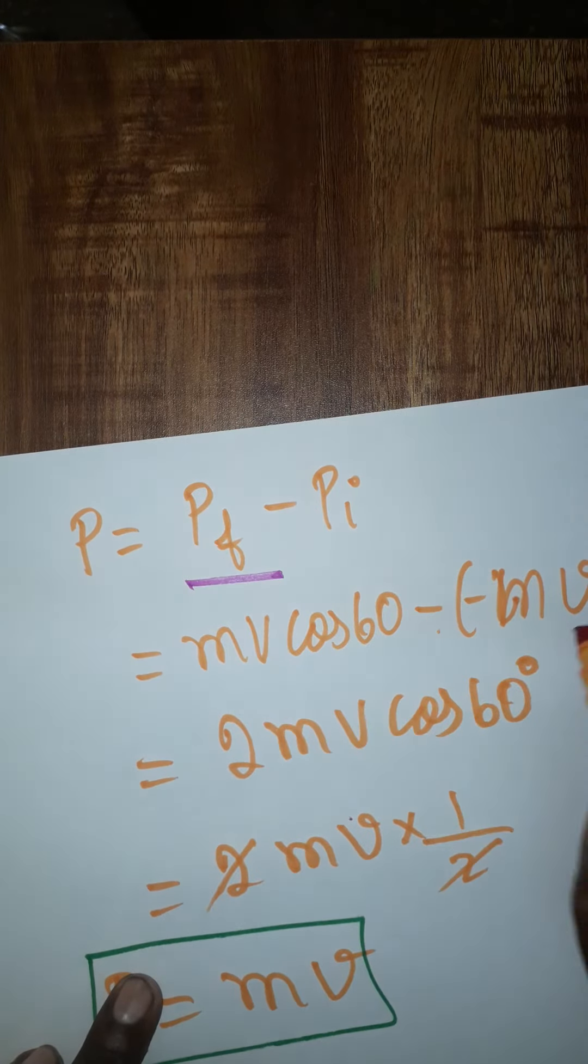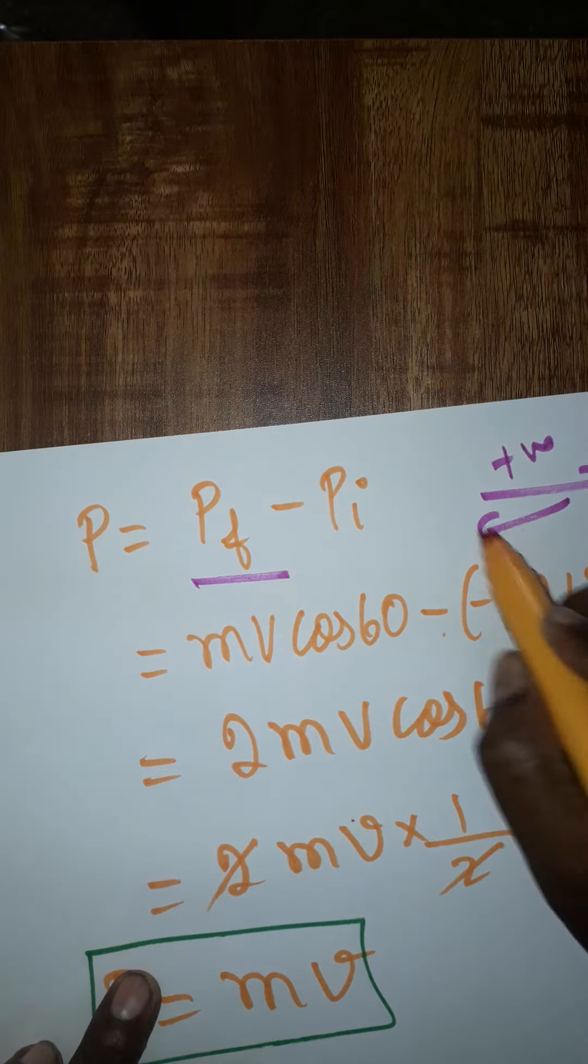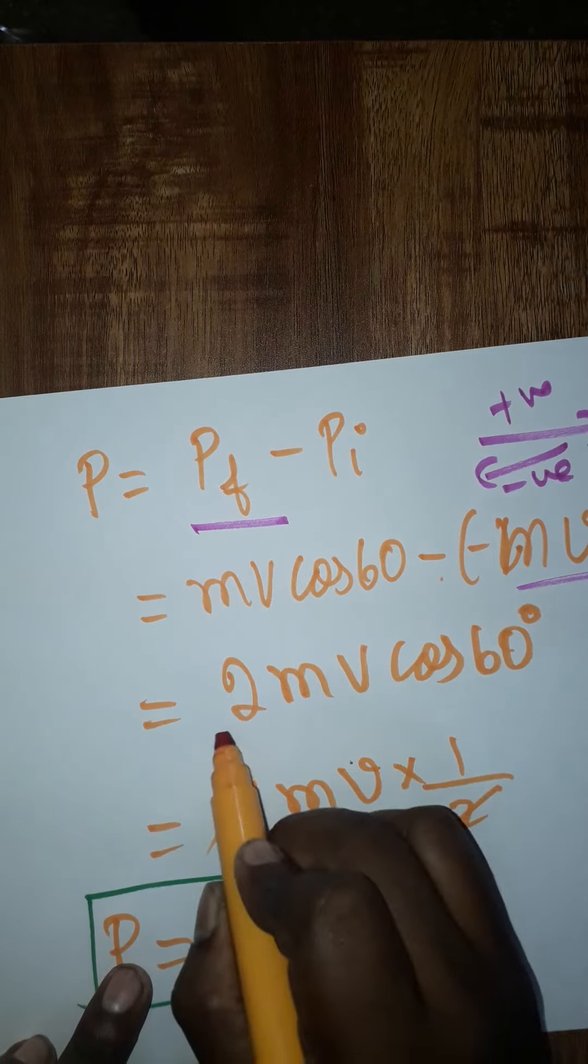This I am taking positive, coming back you can take as negative. So either one you can take as negative. Two times mv cos θ, cos 60 degrees will be 1 by 2. Two gets canceled.